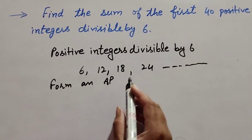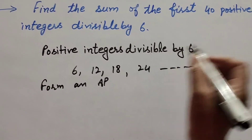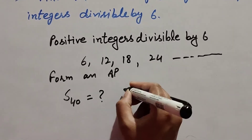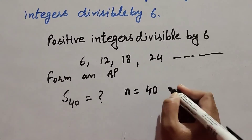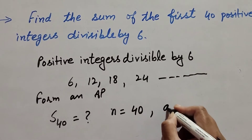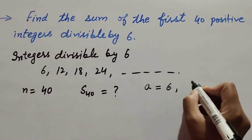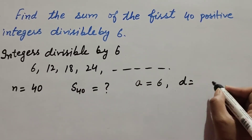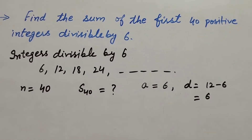So we find the sum of n number of terms in this AP. Here n is equal to 40, so the total number of terms in the given AP is 40. The first term a is equal to 6, and the common difference d is equal to the second term minus the first term, 12 minus 6, which equals 6.